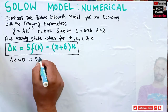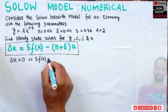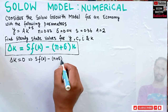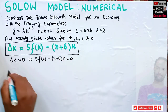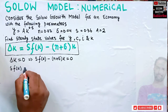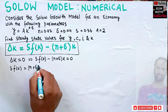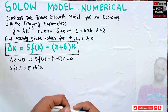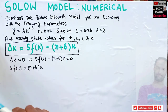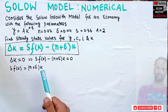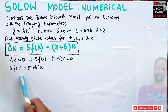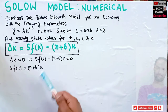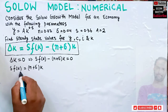If Δk = 0, this implies s·f(k) − (n + δ)·k = 0, which we can rewrite as s·f(k) = (n + δ)·k. At the steady state level, investment equals depreciation — whatever is being invested goes toward maintaining the capital stock.